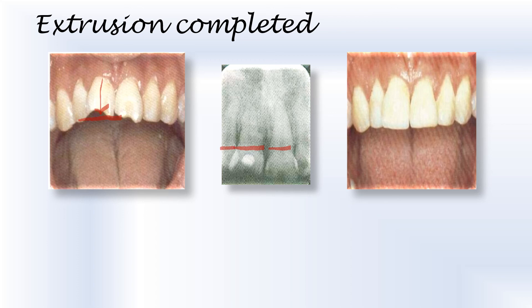The fractured crowns are restored with composite resins to give them a nice anatomy and good aesthetic appearance. The follow-up procedures for this kind of trauma involve continuous clinical and radiographic monitoring to check for any signs of resorption, root resorption, or ankylosis.